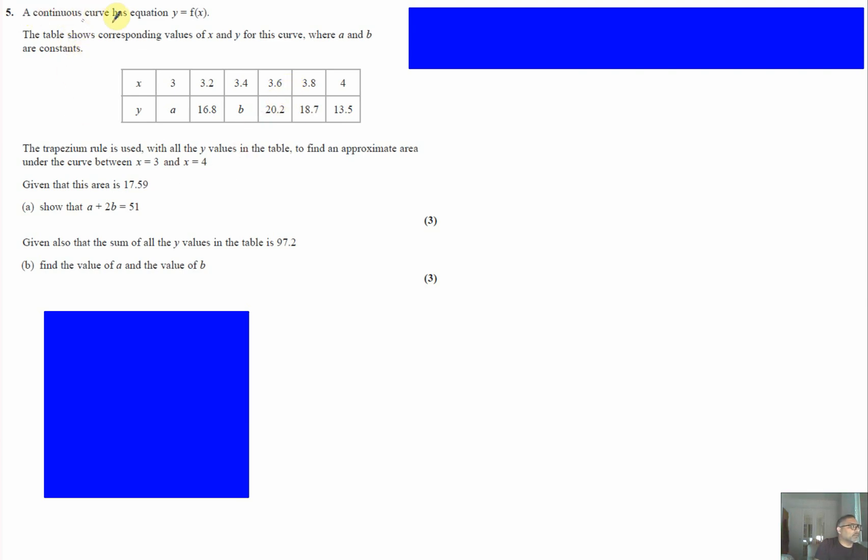Question 5 presents a continuous curve with equation y equals f of x. A table shows corresponding values of x and y with some missing values. The trapezium rule will be used with all y values to find an approximate area under the curve, and we need to show that a plus 2b equals 51.